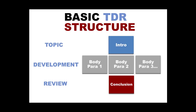Most of you will be familiar with the elements of an essay. You begin with the introduction, move on to the body paragraphs, and finish with the conclusion. These elements go together into what we call a TDR, or Topic Development Review structure. This is the basic template for a well-structured essay. But what does each element consist of and how do you put them together?